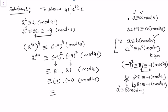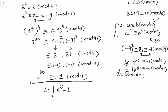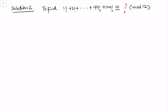This becomes congruent to 1 modulo 41. On the left-hand side we have 2 to the power 20, and on the right side we have 1. This shows that 41 divides 2²⁰ minus 1, or equivalently, on dividing 2²⁰ by 41 we get remainder 1. This proves the first problem.